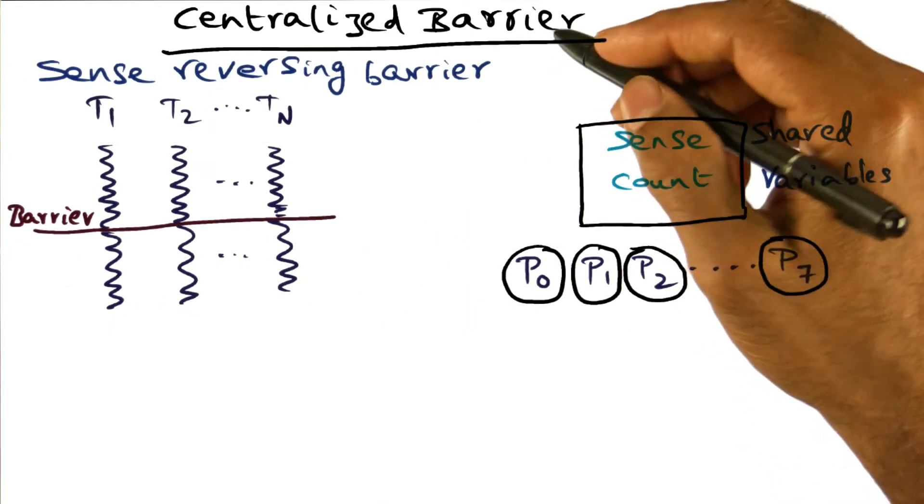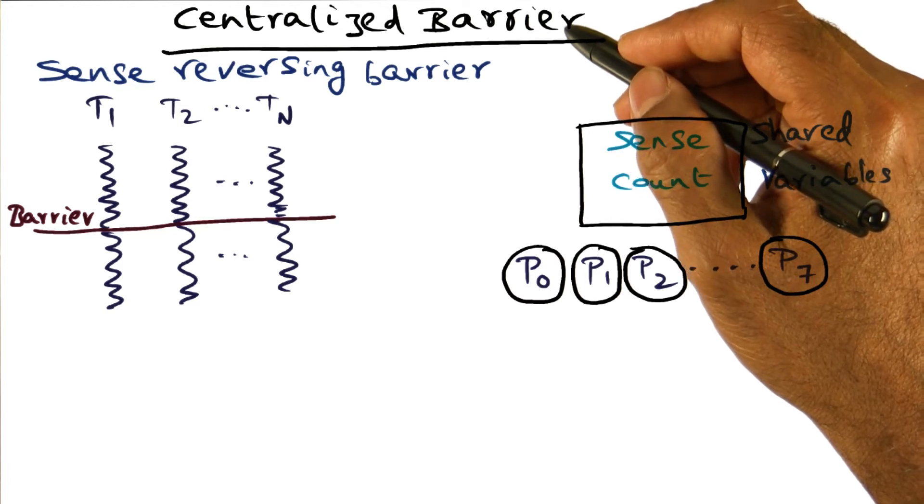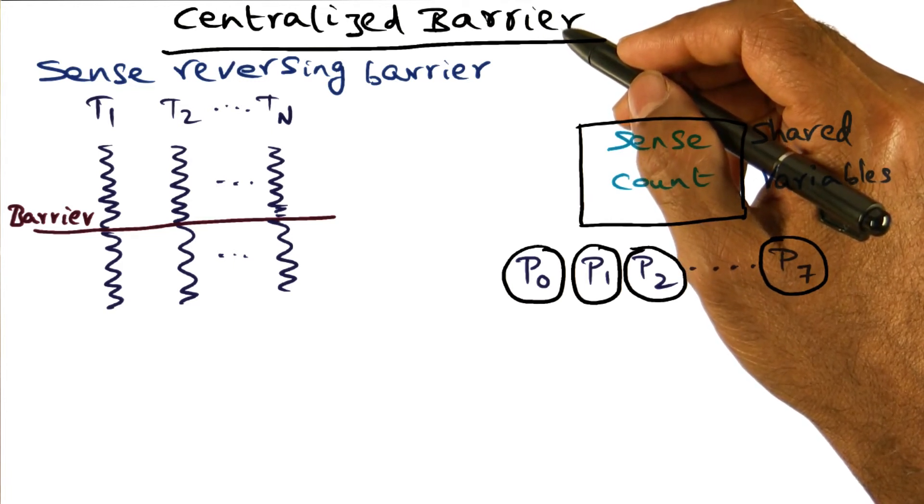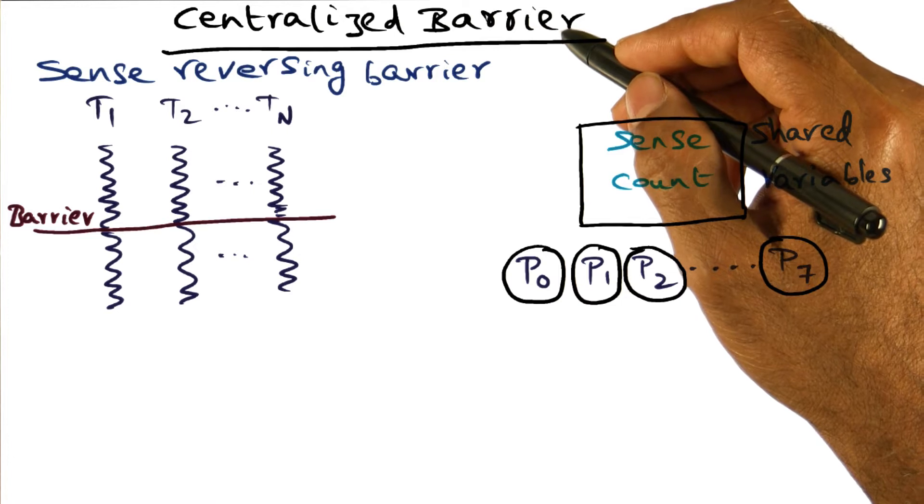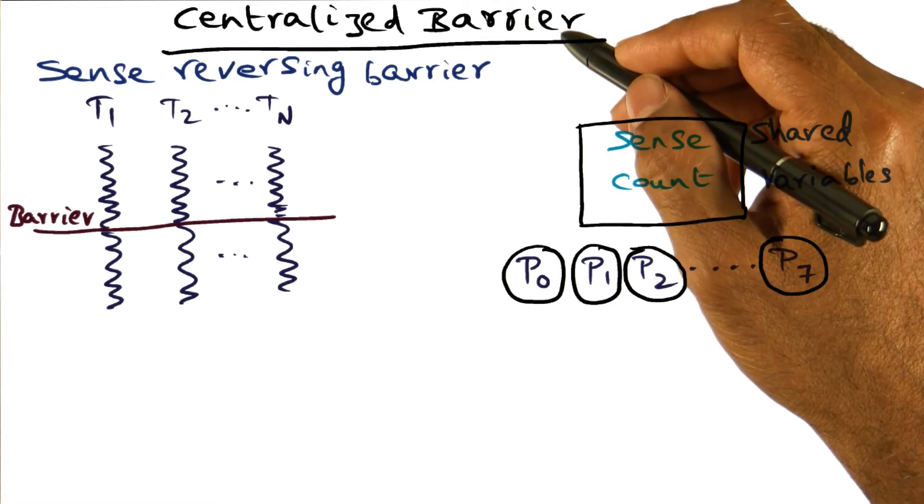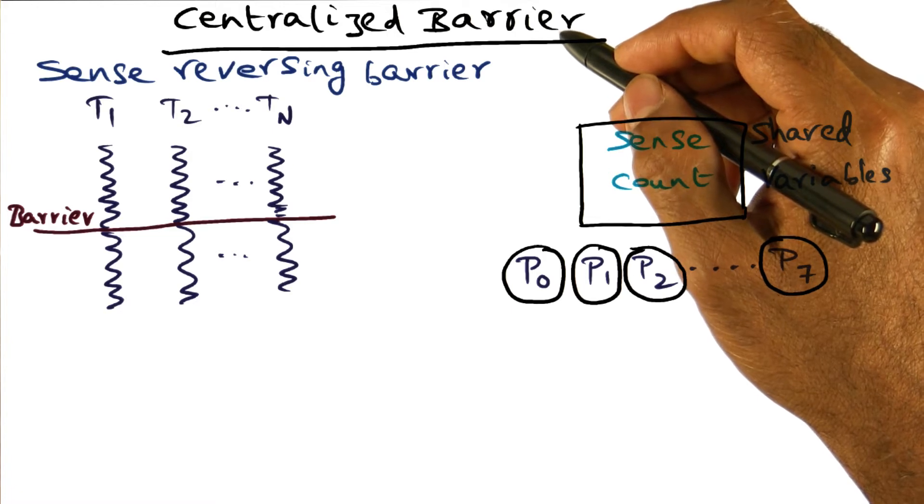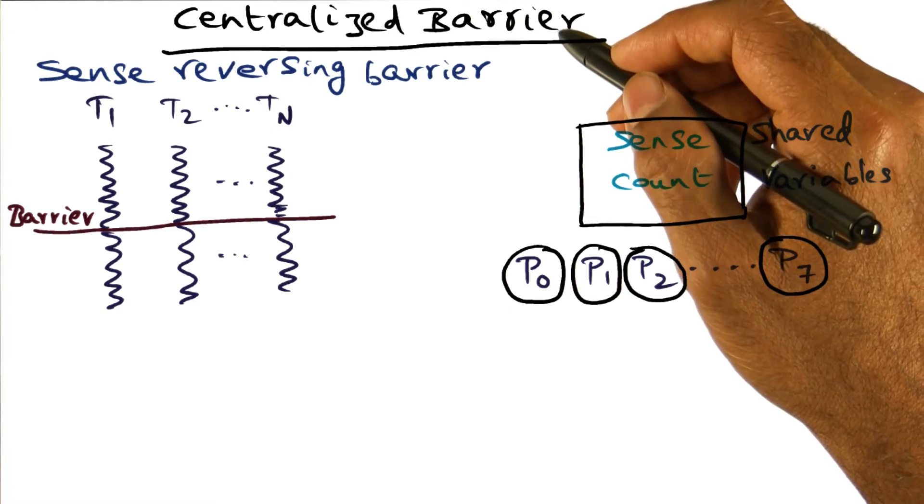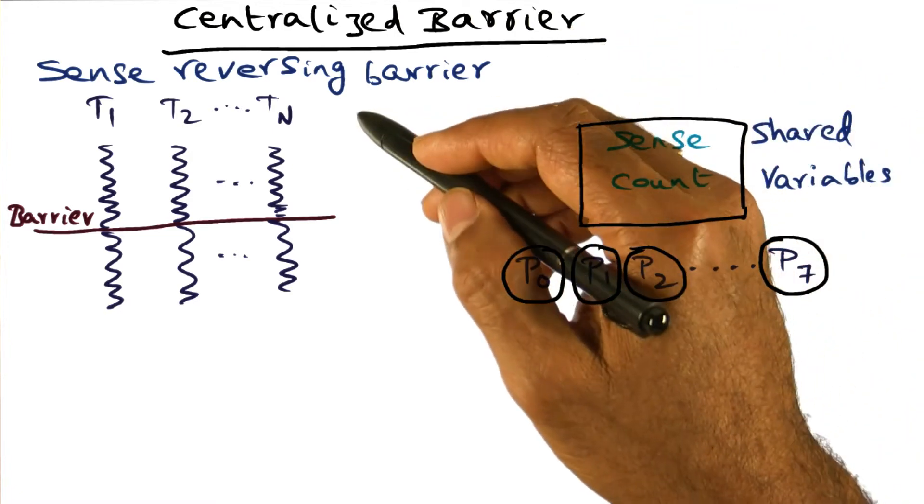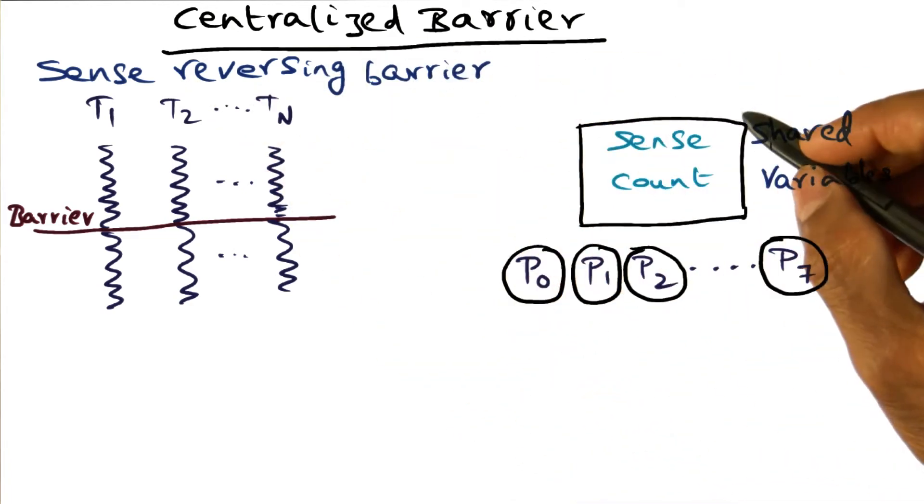So we solved the problem with the first version of the centralized barrier, the counting barrier, by having a second spin loop. That's the problem. There are two spin loops for every barrier in the counting algorithm, and ideally we would like to have a single spin loop. That's the reason that we have this particular algorithm, which is called sense reversing barrier.